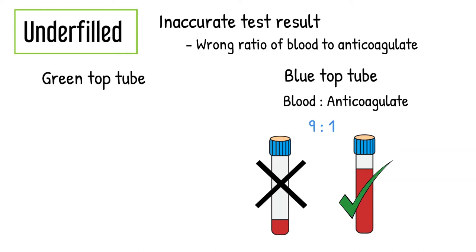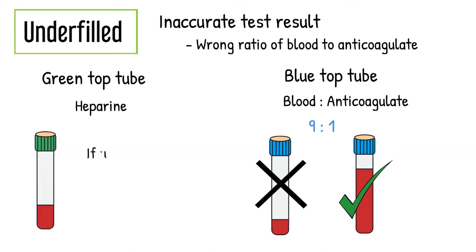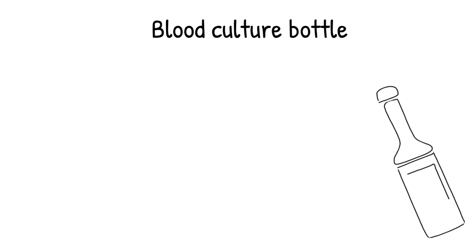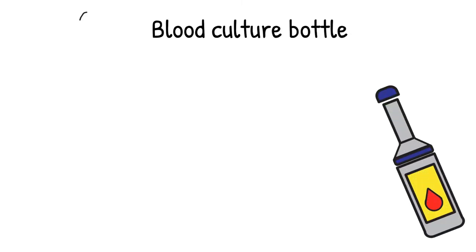Another example would be the heparin tube. When the heparin tubes are underfilled, the results are also not accurate. Heparin is reported to cause falsely low sodium, CK, and GGT. Another good reason to reject a specimen that is underfilled is when the blood culture bottle is underfilled.